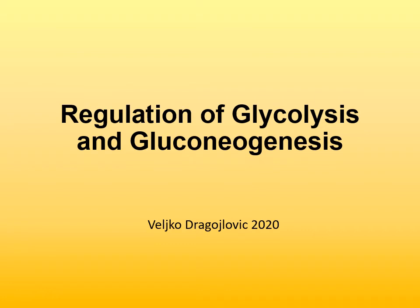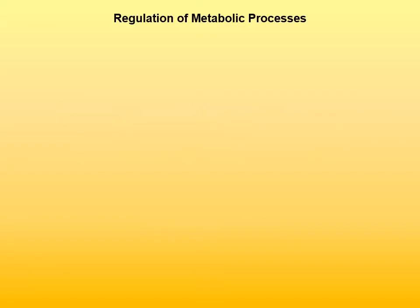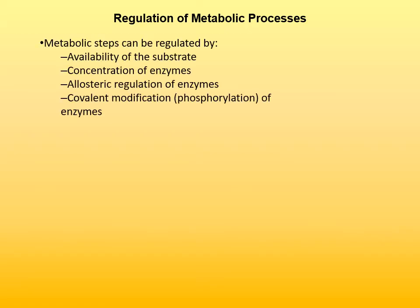In this video, we are going to examine how glycolysis and gluconeogenesis are regulated. In general, metabolic processes can be regulated in several ways: by the availability of the substrate, concentration of the enzymes, allosteric regulation of enzymes, or covalent modification, for example phosphorylation of enzymes.